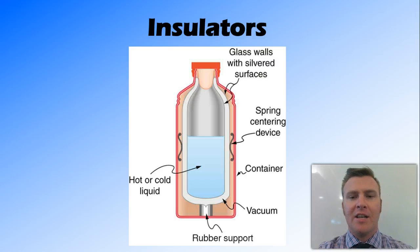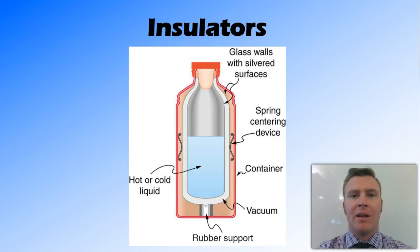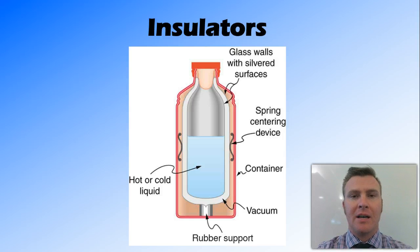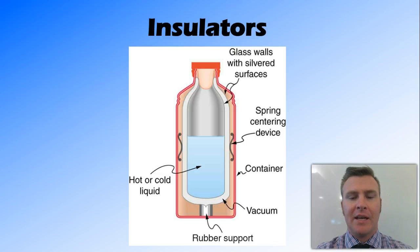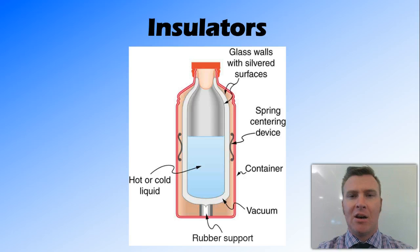Another example of an insulator is a thermos flask. A thermos flask has a double wall — an inside wall in contact with the liquid you're trying to keep hot or cold, and then a vacuum layer between the two walls. This takes insulation a step further than gas, since gases are poor conductors. A vacuum doesn't conduct heat at all because there are no particles to pass the heat on. Outside that is another layer open to the elements, and this vacuum stops heat from transferring between the inside and outside walls.